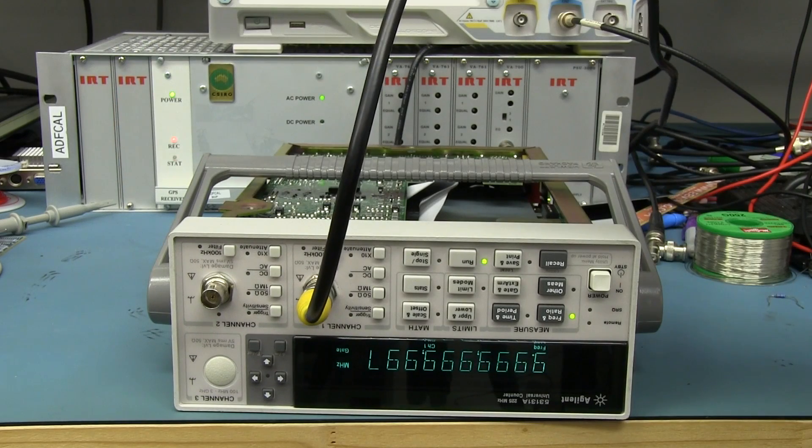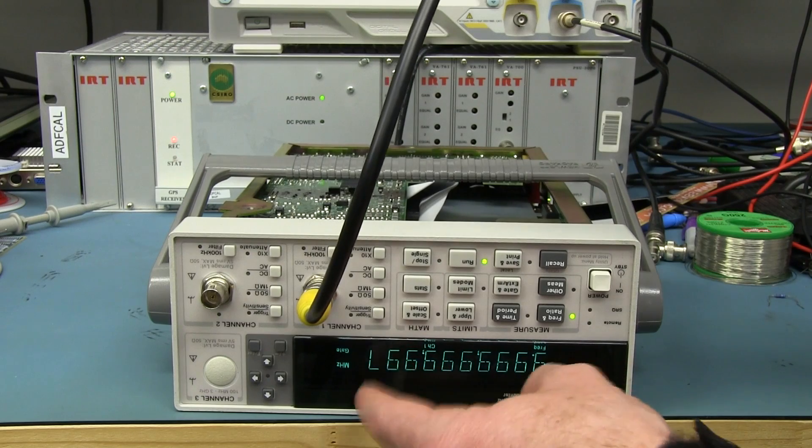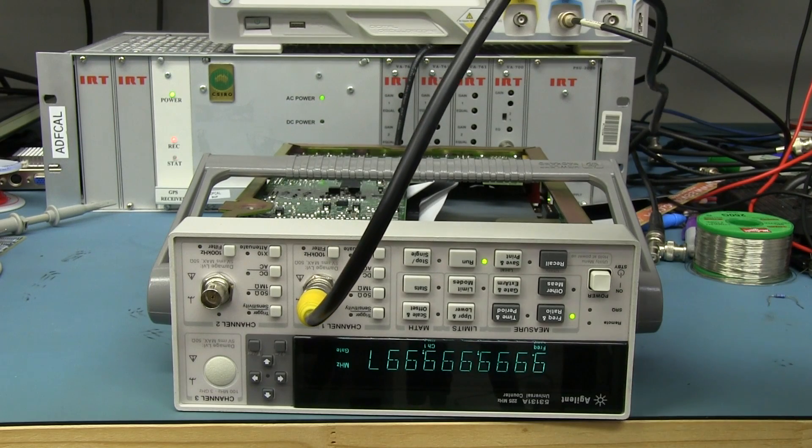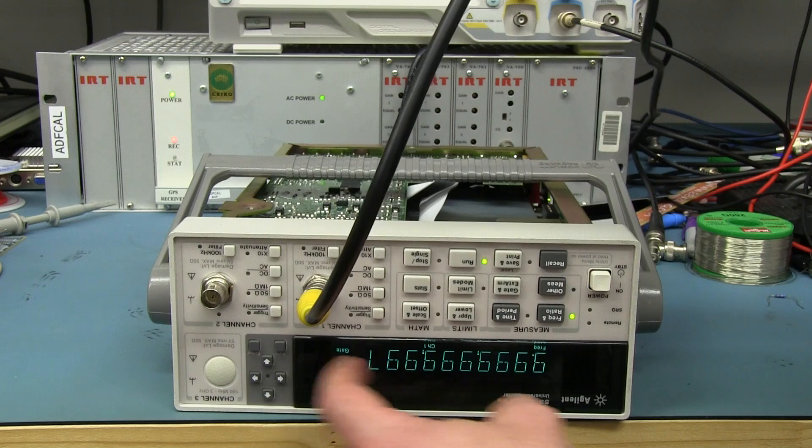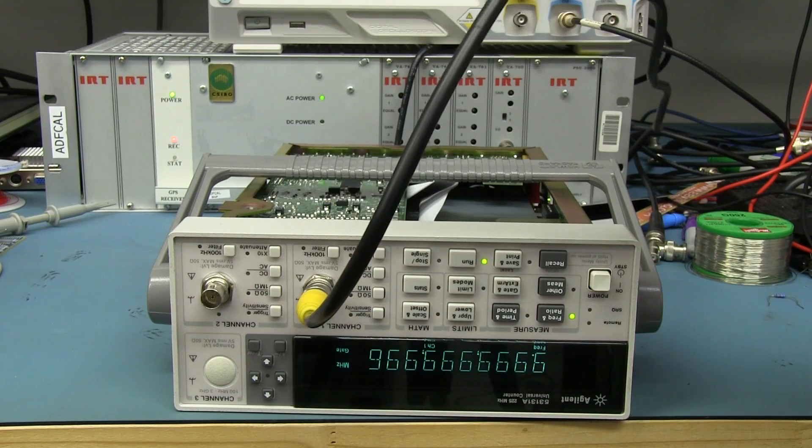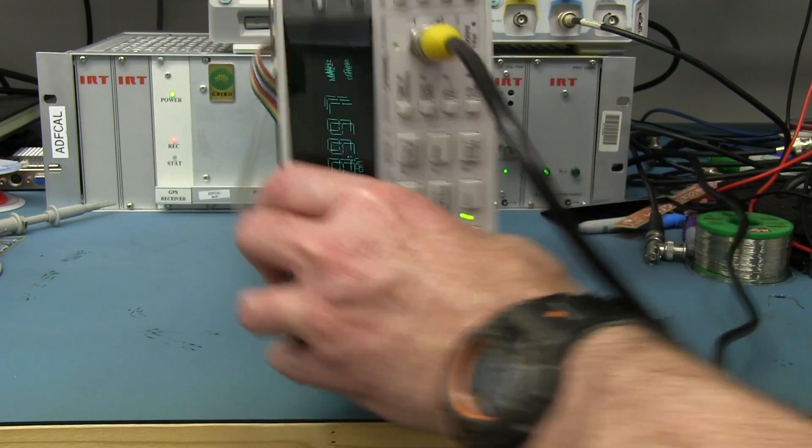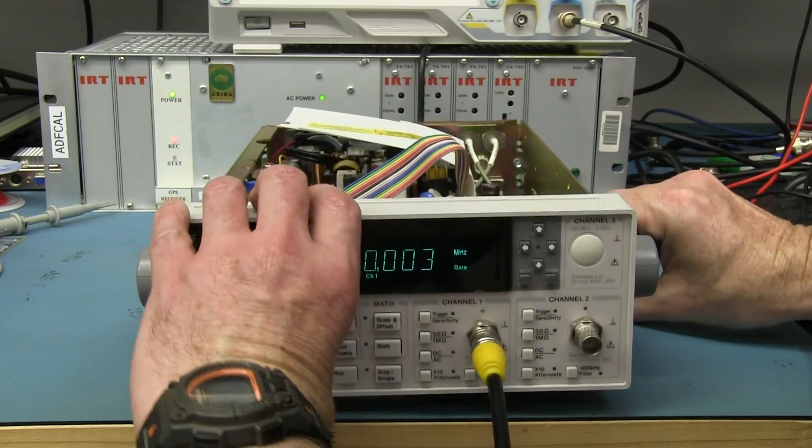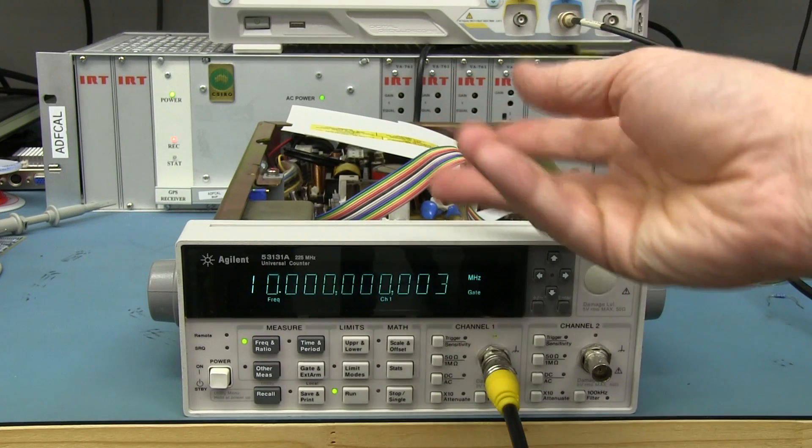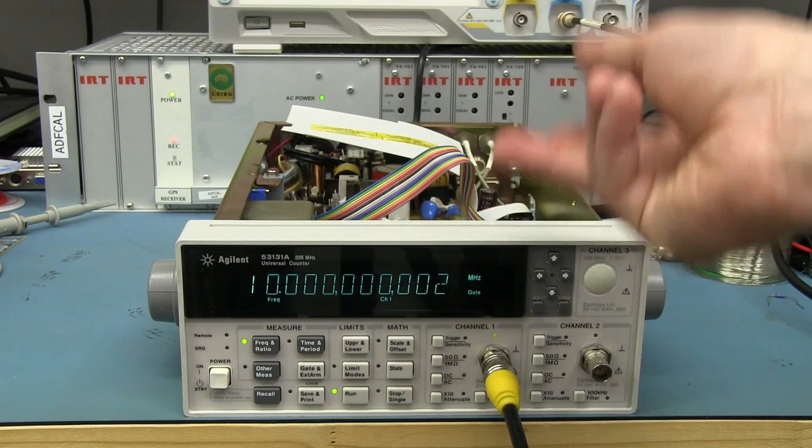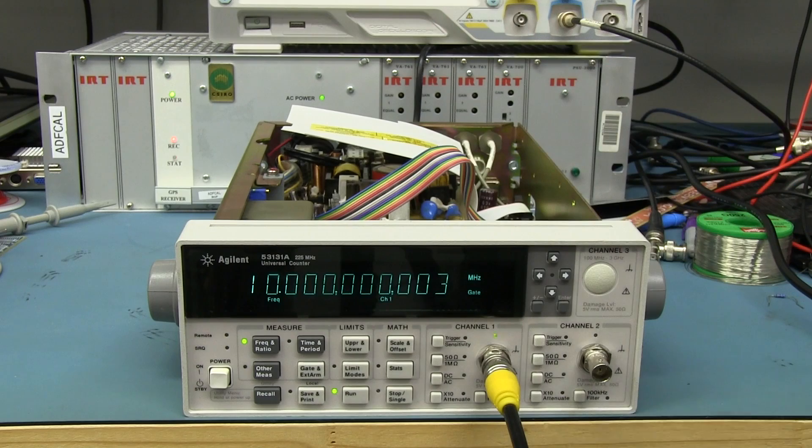And yeah, it pretty much does. So it went from 4 millihertz above to basically 4 millihertz below or thereabouts, because we don't have the resolution. We'd have to go to a greater gate time there to get better resolution. But you can see that we can actually detect gravity, because when you turn a crystal upside down, you're changing its physical vibration properties relative to that gravitational field.